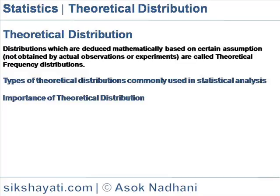Types of theoretical distributions commonly used in statistical analysis: Binomial distribution, due to John Bernoulli; Poisson distribution, due to S.D. Poisson; and Normal distribution, due to De Moivre.